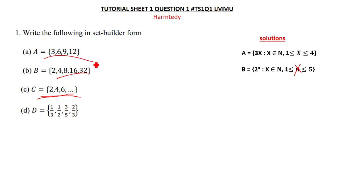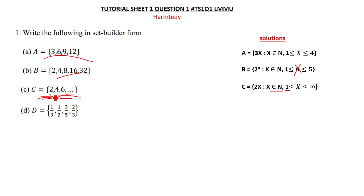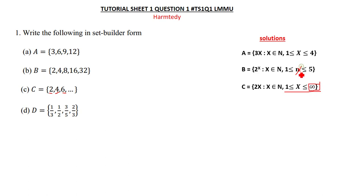The solution for the third one is straightforward: when you multiply any natural number starting from 1 by 2, you get one of these answers — 1×2=2, 2×2=4, 3×2=6, and so on. The numbers don't end, which is why I've put infinity at the end, to show that these numbers continue without stopping.